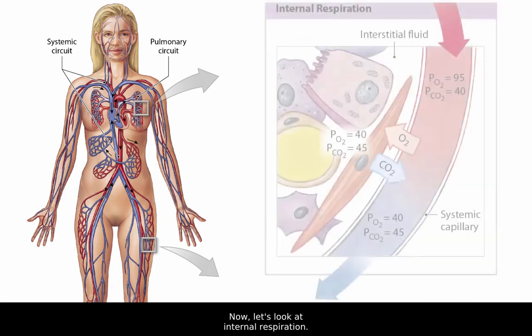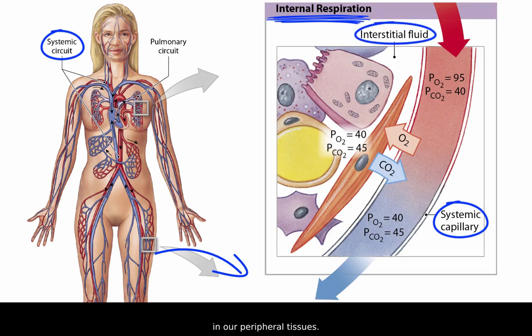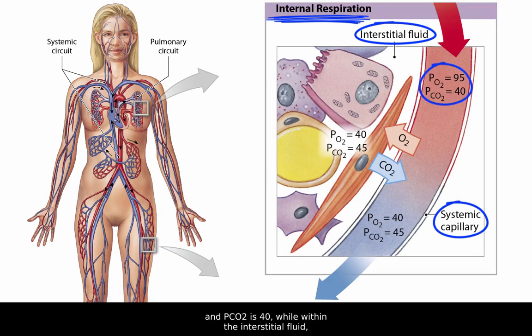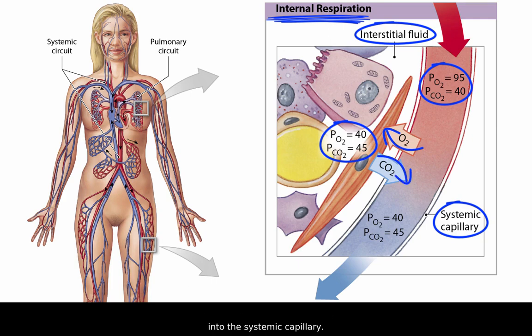Now let's look at internal respiration. Internal respiration is the same process in reverse, with the exchange of gases now between the blood in systemic capillaries and the interstitial fluid in our peripheral tissues. In a systemic capillary, PO2 is 95 and PCO2 is 40, while within the interstitial fluid, PO2 is 40 and PCO2 is 45. As a result, oxygen moves from the capillary into the interstitial fluid that bathes tissues, and carbon dioxide moves out of the interstitial fluid into the systemic capillary.